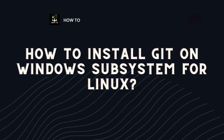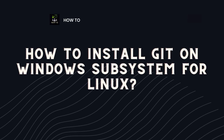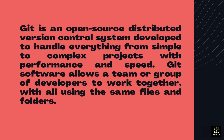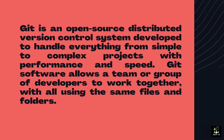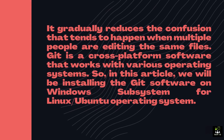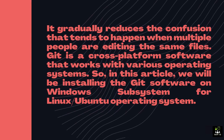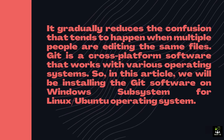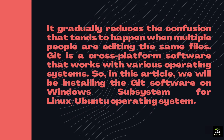Git is an open-source distributed version control system developed to handle everything from simple to complex projects with performance and speed. Git software allows a team or group of developers to work together, all using the same files and folders. It gradually reduces the confusion that tends to happen when multiple people are editing the same files. Git is a cross-platform software that works with various operating systems.